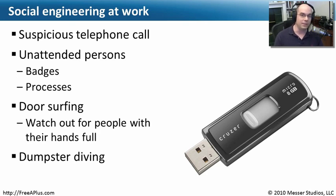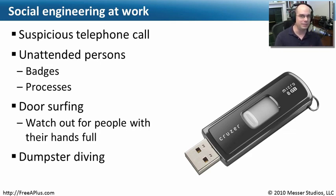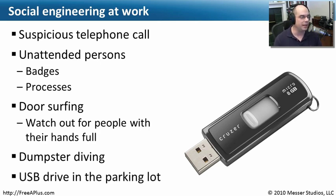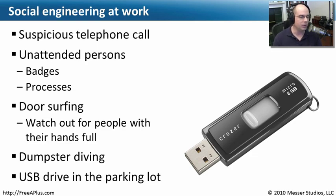Another social engineering method is dumpster diving — going through a company's trash receptacle out back. This is why we shred all types of paper, because people will go into your garbage and pull out documents, sometimes very sensitive ones. And if you really want to get into someone's network, leave a USB key in the parking lot that has a Trojan or backdoor on it, or something that causes someone to run the programs on that drive. It's a very easy way to get into environments, so people must be trained to look for these things.